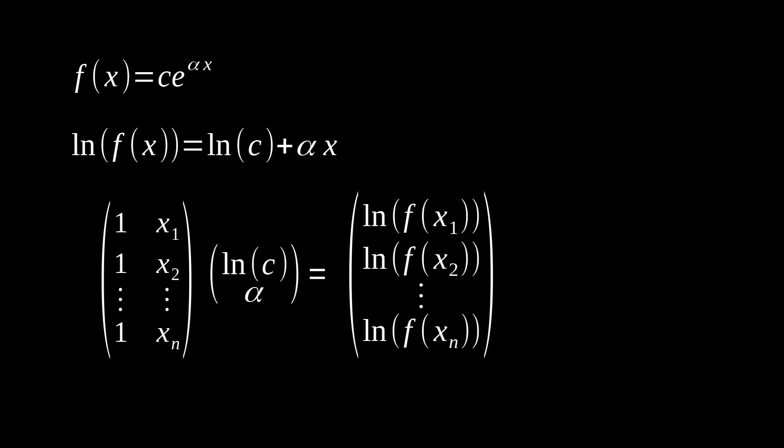We have a simple two column Vandermonde matrix with ones or x to the zero down the first column, our x data running down the second column. Our coefficients change now so that we have the natural log of c and alpha in our x vector, and then we're taking the natural log of each one of our y coordinates that are still being placed in our b vector.